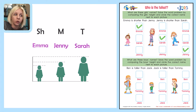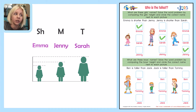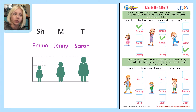Let's double check and make sure we didn't pick any of the same ones. We've got Emma, Sarah, and Jenny. Let's read through one more time and make sure it makes sense — it's always a good idea to go back. It says Emma is shorter than Jenny. Is Emma shorter than Jenny? Yep. And Jenny is shorter than Sarah. Is Jenny shorter than Sarah? Yeah. Great job — we did that one correctly.